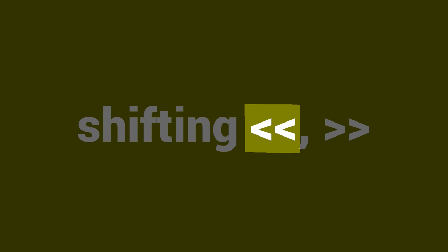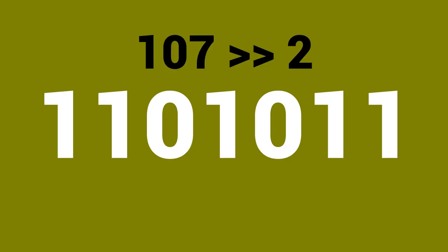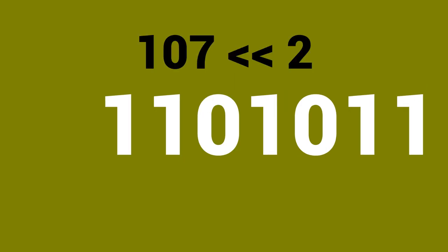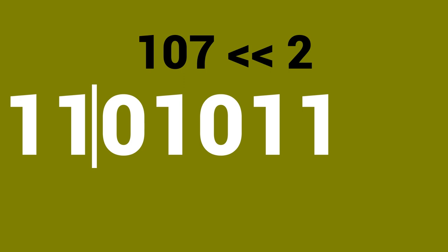Let's talk about shifting. In Python and many other languages, there is the left shift operator and the right shift operator. For example, if we shift 107 to the right by two, we get a value of 11010 in binary, which is the same as 26. For the left shift, shifting 107 by two to the left — padding the end with zeros — gives us a value of 428.